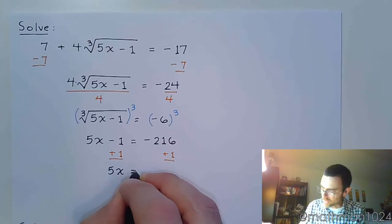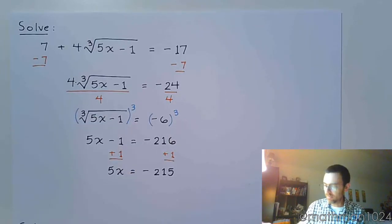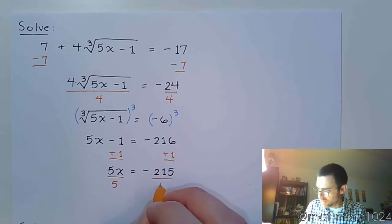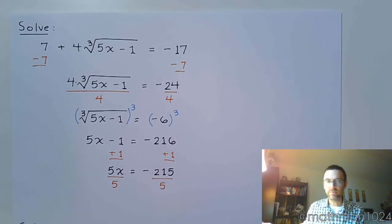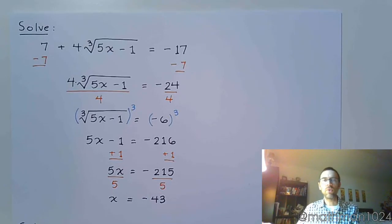So 5x is equal to negative 215. Divide both sides of the equation by 5. And x is equal to negative 43.